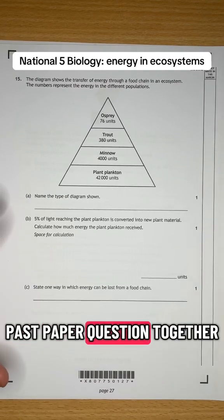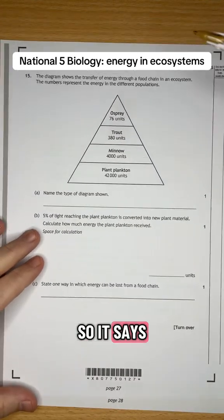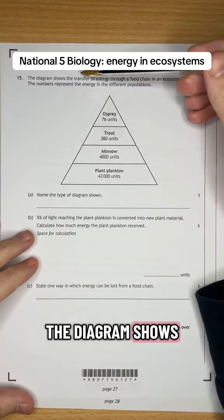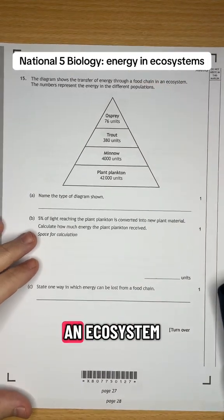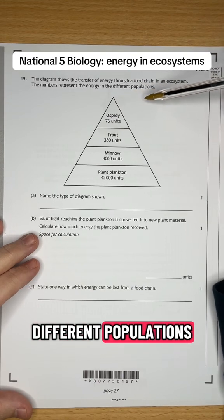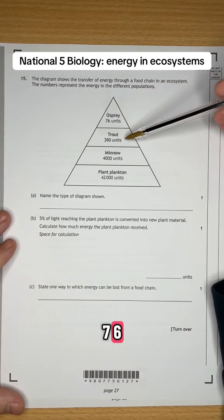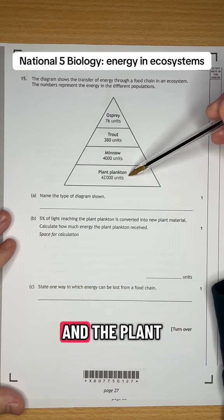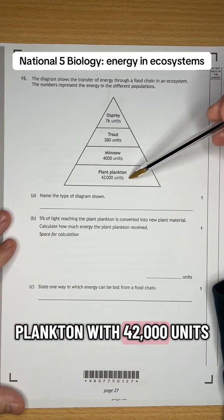National 5 students, let's do this past paper question together. The diagram shows the transfer of energy through a food chain in an ecosystem. The numbers represent the energy in different populations. We've got the osprey with 76, the trout with 380, the minnow with 4,000, and the plant plankton with 42,000 units.